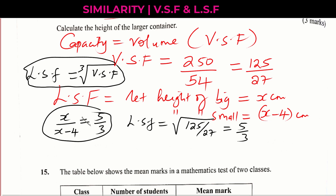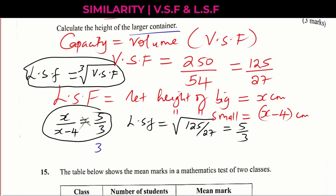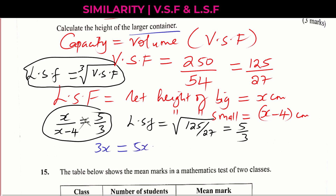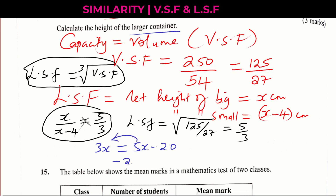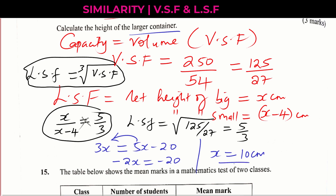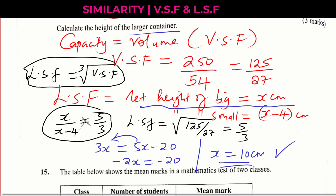Cross multiplying: x multiplied by 3 gives 3x, which equals 5 times (x minus 4), giving 5x minus 20. Solving for x: bringing x terms together gives 3x minus 5x equals negative 20, so negative 2x equals negative 20. Dividing both sides by negative 2, we get x equals 10 centimeters. Remember, we let the height of the bigger container be x, and that is what the question asks — therefore, the height of the larger container is 10 centimeters.